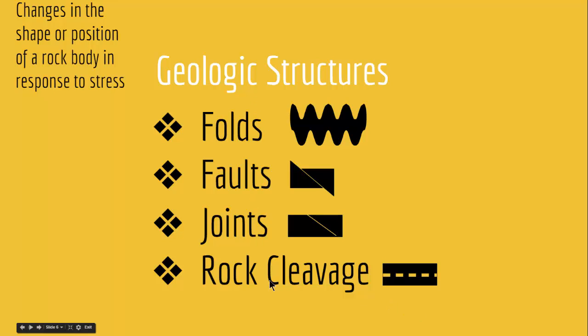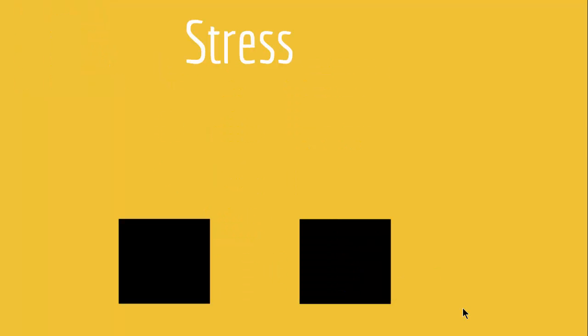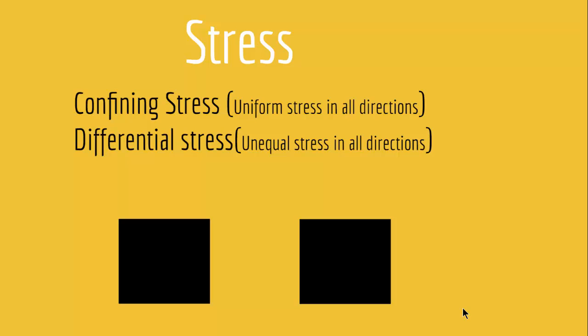We will say more about each of these in later lectures. Now let's get deeper into stress. We have two types: confining stress and differential stress. Confining stress is uniform stress in all directions — all it does is make a rock either bigger or smaller uniformly. Differential stress, on the other hand, causes changes in one direction that differ from changes in another direction. We are more concerned with differential stress because the structures from confining stress are not very interesting, whereas differential stress can create beautiful geological structures like folds, faults, rock cleavages, and fractures.